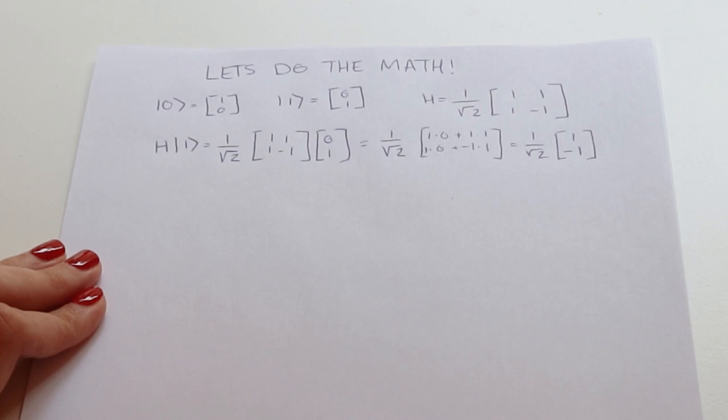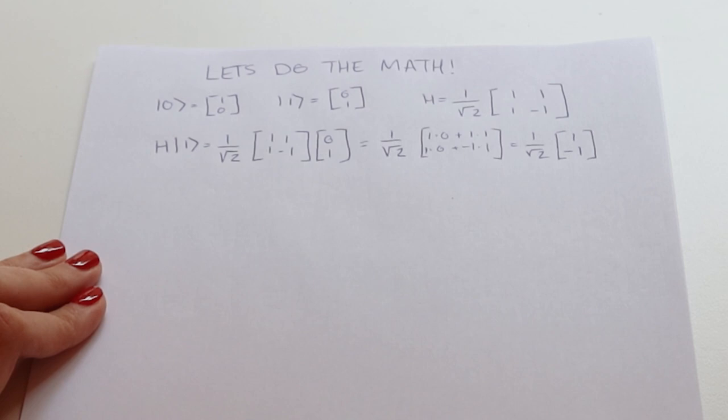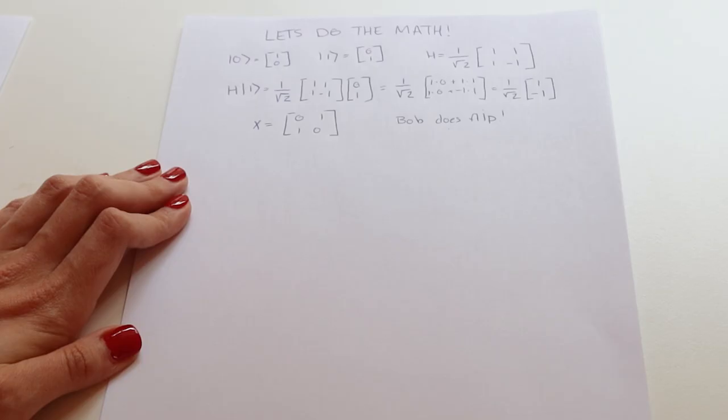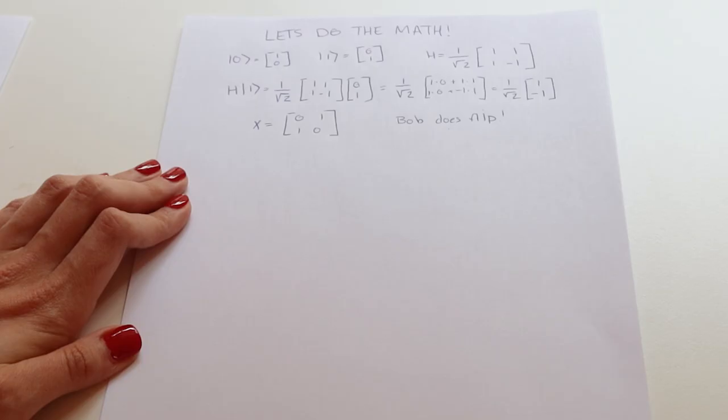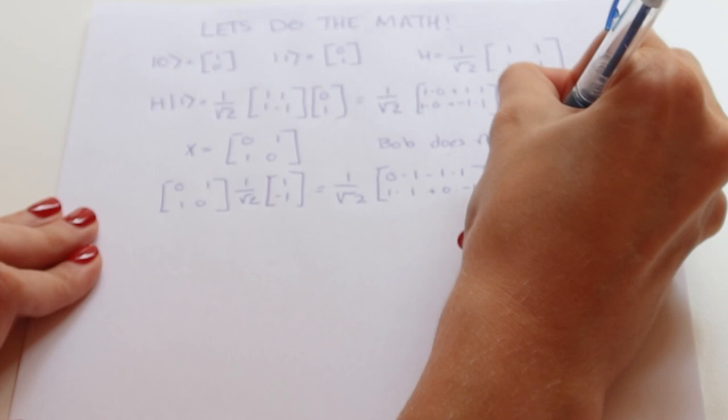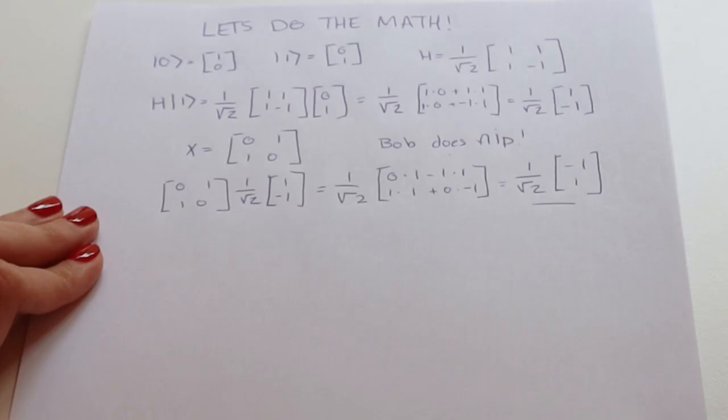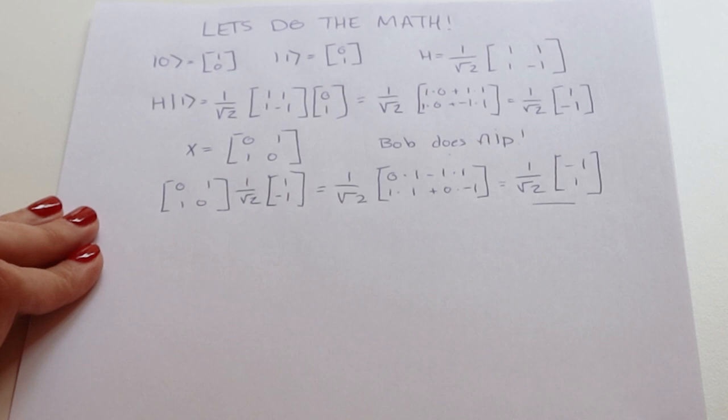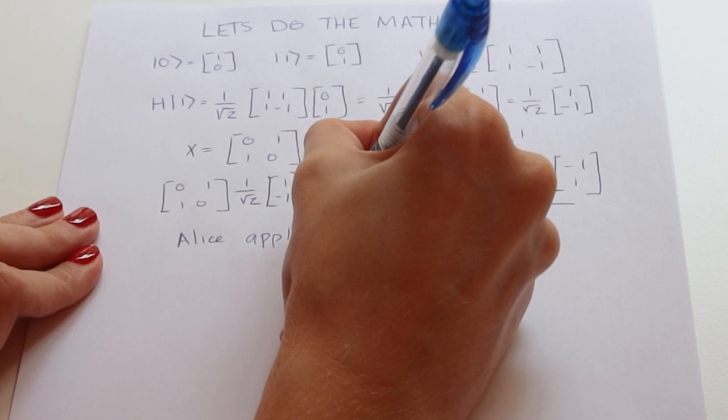Now we need to decide if Bob is actually going to flip the qubit or not. So if he does flip, he applies the X gate. And this is what the X gate looks like. So let's say Bob does flip. So then let's apply the X gate to the state that we already have. Again, we do the matrix multiplication here.